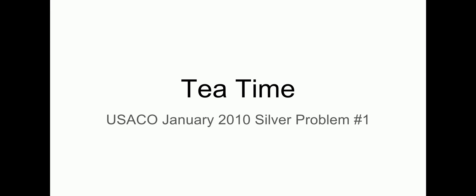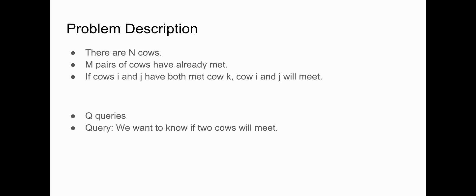In this video, we will be solving Tea Time from the Yusiko 2010 January silver contest. We're given N cows, and N pairs of these cows have already met each other. If two cows I and J have both met cow K, then cows I and J will meet. We're also given Q queries, and for each query we want to know if two cows will meet — answering yes if they will meet and no if they will not.